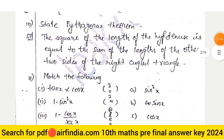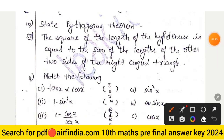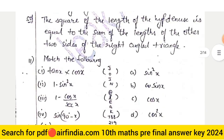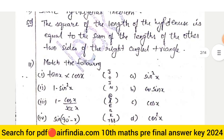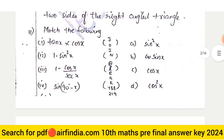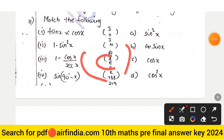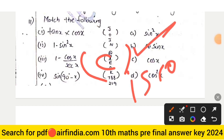Question number nine also involves the Pythagoras theorem: the square of the length of the hypotenuse is equal to the sum of the squares of the lengths of the other two sides of the right-angle triangle. This is the statement of Pythagoras theorem. Question number eleven — match the following — option number C is correct.